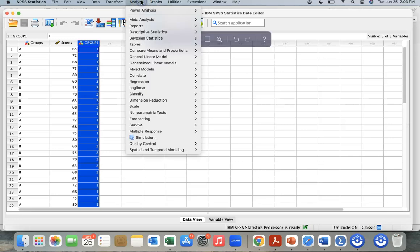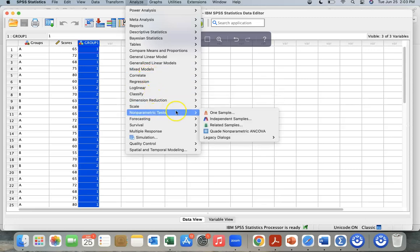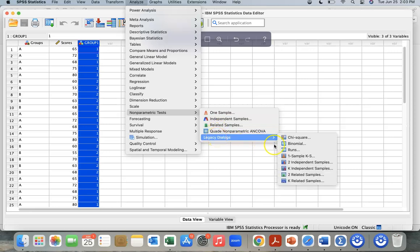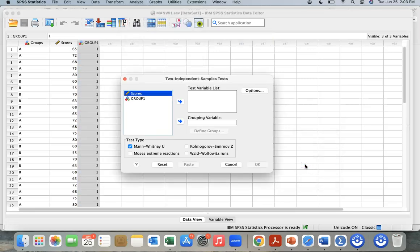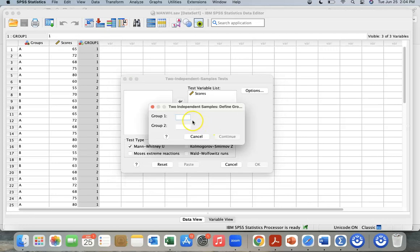Let's take a look at how to analyze the information. Go to Analyze, go to Nonparametric. We can use this independent samples test. I like to use the legacy dialog. Go down to two independent samples. Score will go into the test variable list, and then we have our group. We'll go down to grouping variables. We want to define them.